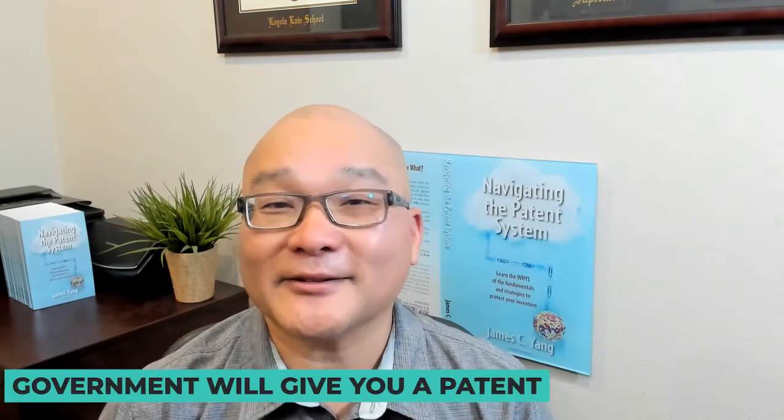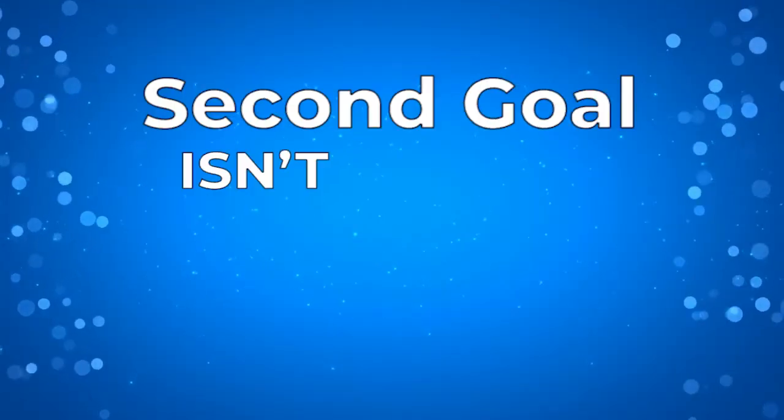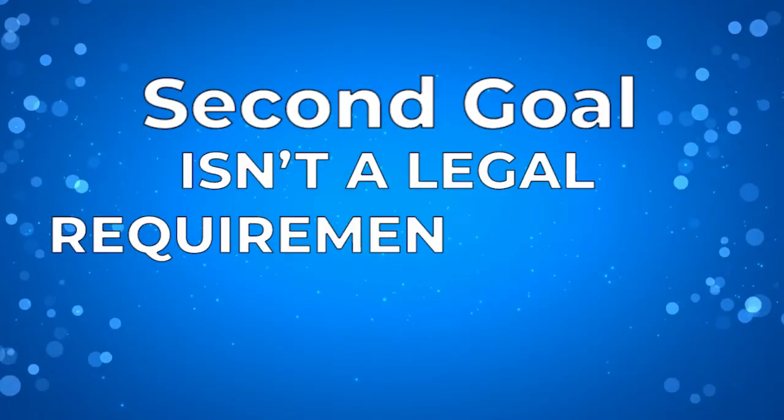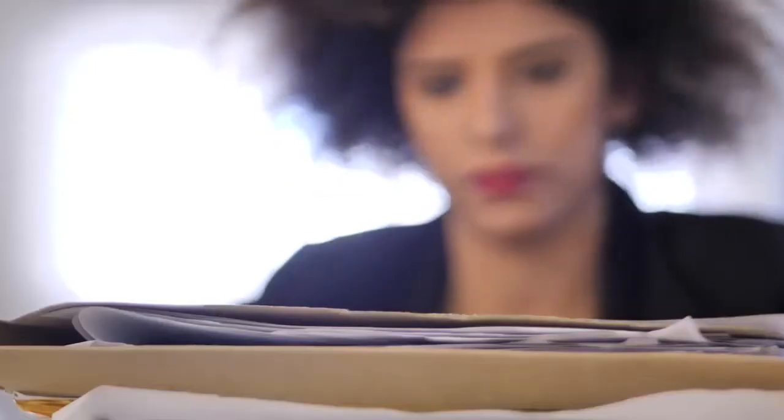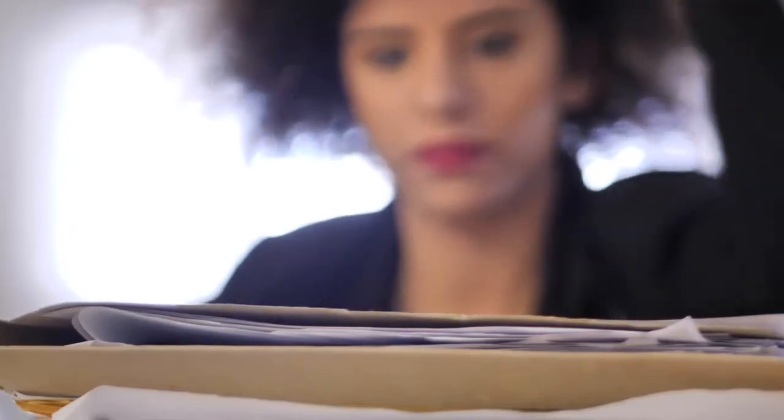That's the bargain that the US government is giving you. You teach others about your invention, and they — the government — will give you a patent. The second goal isn't a legal requirement, but it's just good practice: include the backup arguments. Most first office actions from the patent office are a rejection.